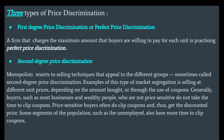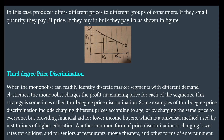Examples of second degree market segregation include selling at different unit prices depending on the amount bought, or through the use of coupons. Generally, buyers such as most businesses and wealthy people who are not price sensitive do not take the time to clip coupons, while price-sensitive buyers often do and thus get the discounted price. In this case, the producer offers different prices to different groups of consumers: if they buy in small quantity they pay price P1, and if they buy in bulk they pay the lower price P4, as shown in the figure.